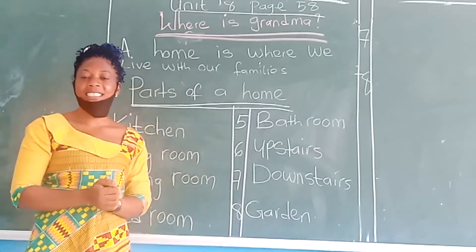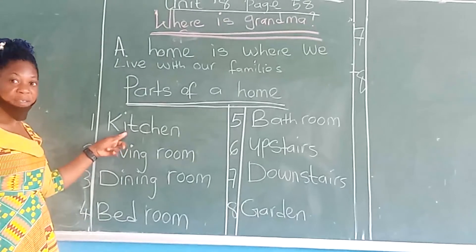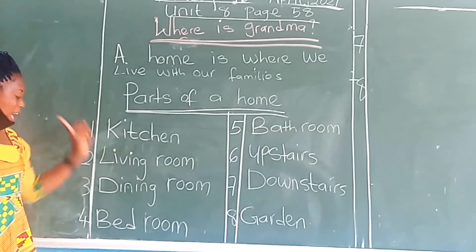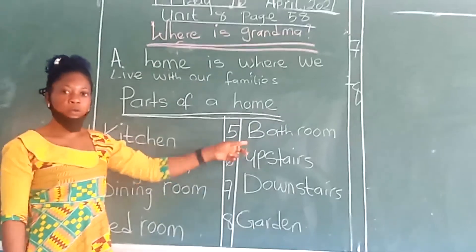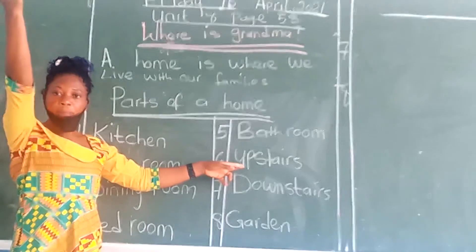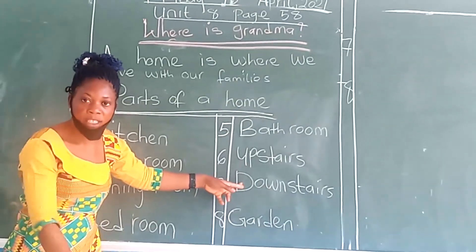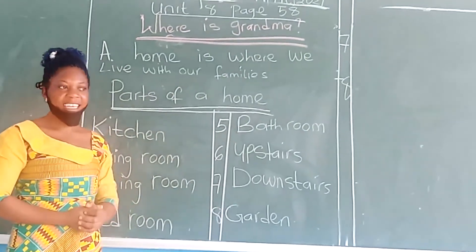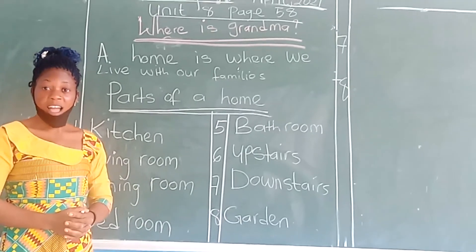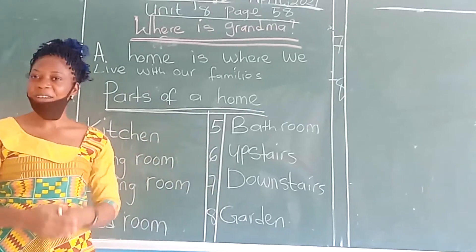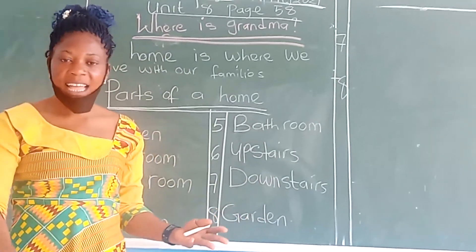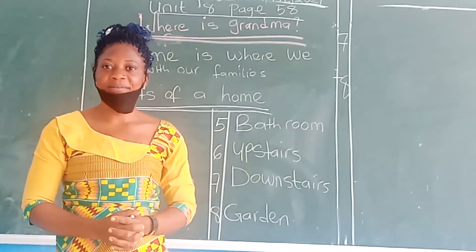So, a home is made up of many parts. We have the kitchen, the living room, the dining room, the bedroom, the bathroom, the upstairs, the downstairs, and probably a garden in big homes.